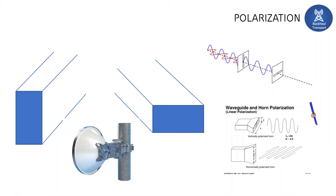For longer distances, vertical polarization is preferred. In urban areas, horizontal polarization is typically chosen, while for rural areas and longer hops, vertical polarization is preferred. This is because horizontal polarization is more susceptible to raindrops and heavy rain — rain fading is quite high in horizontal polarization — so horizontal polarization is mostly used in urban areas.